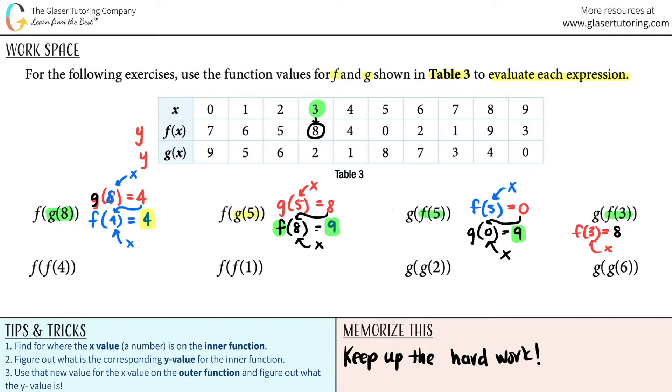Now we go to the outer function. g of 8, because you always plug that number in, and that is your new x value. So let's see, the new x value is an 8. We're going to the g function, so that's a 4. And there you go. That's the answer for the fourth one.